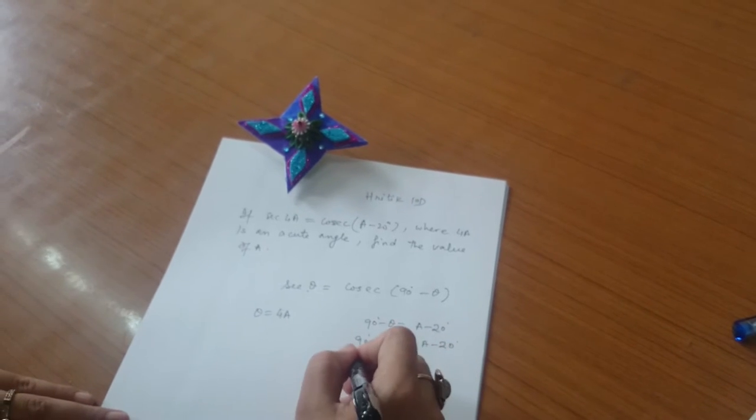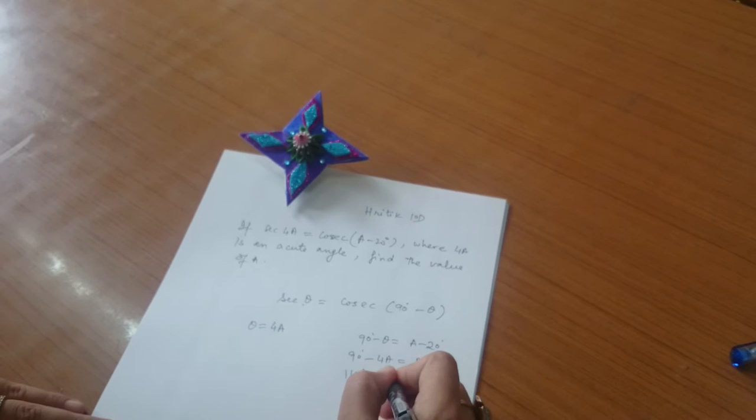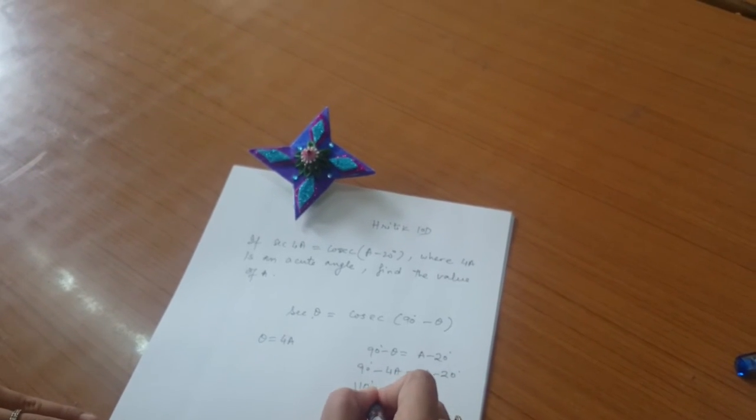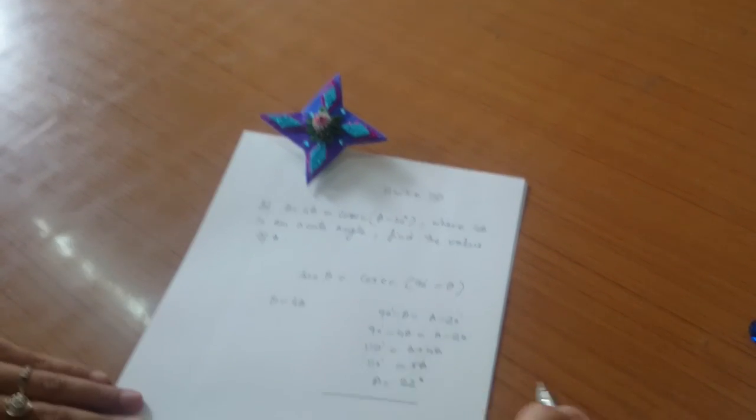Then we would get the answer that angle a equals... 110 degrees is equal to a plus 4a, which is 5a. And angle a equals 22 degrees. Good job.